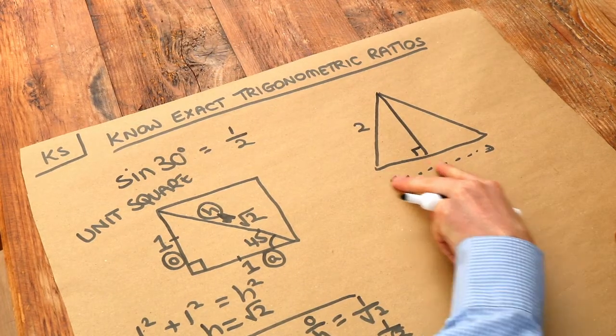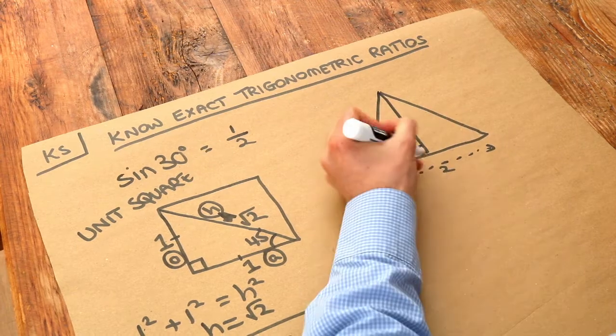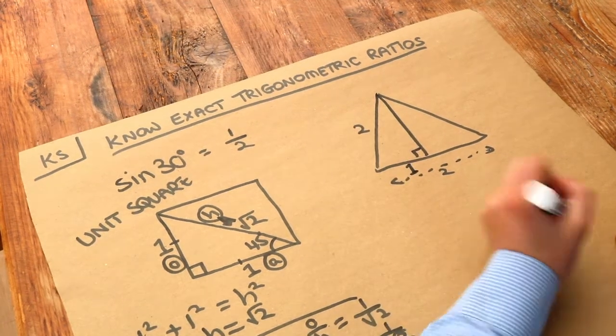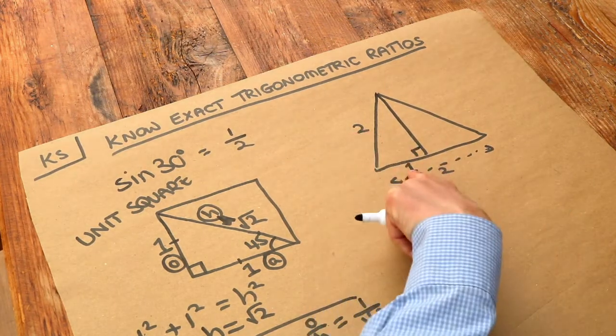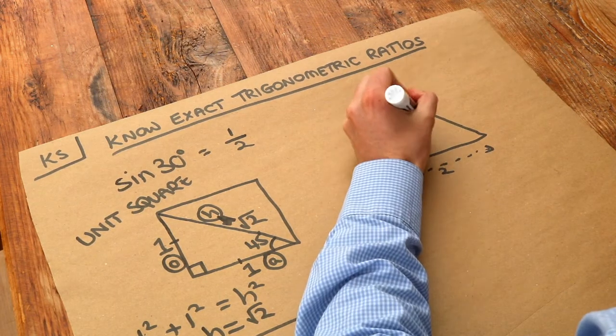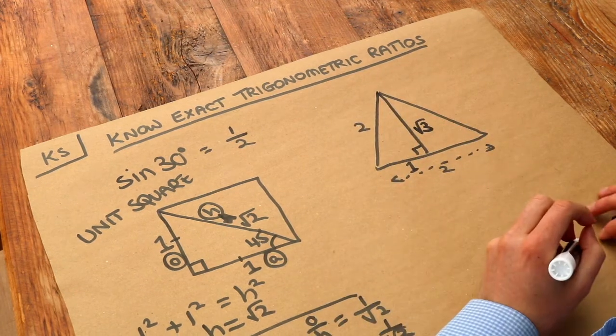And let's consider the other side. Well, that bottom side there is half of 2, which is 1. And then if we use Pythagoras again, you get the square root of 2² - 1², which is root 3. So that height of this triangle is root 3.